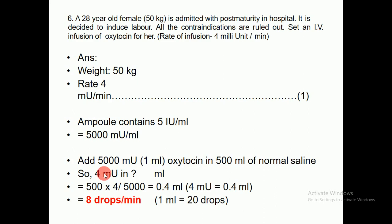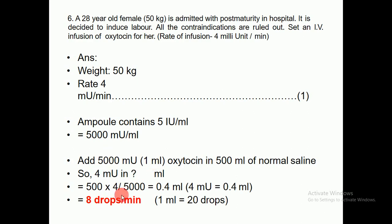Now, 4 milli-units per minute is equal to how much ml? This is a simple cross-multiplication: 500 ml multiplied by 4, divided by 5000. This gives us 0.4 ml. So 4 milli-units is equal to 0.4 ml.